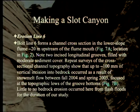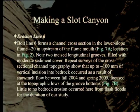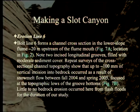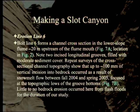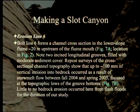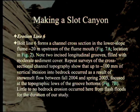Erosion line six forms a channel cross section in the lower slope flume approximately 20 meters upstream from the flume mouth. Note two incised longitudinal grooves filled with moderate sediment cover. Repeat surveys of the cross-sectional channel topography show that up to 100 millimeters of vertical incision into bedrock occurred as a result of the snowmelt flow between fall 2004 and spring 2005, focused at the topographic lows of the groove bottoms.